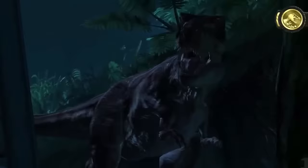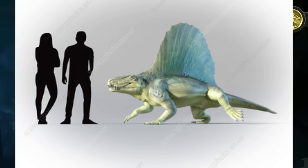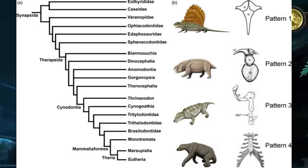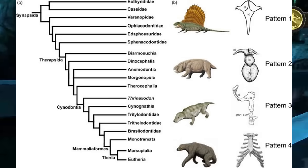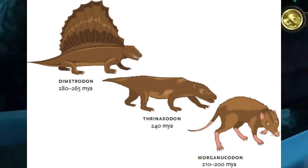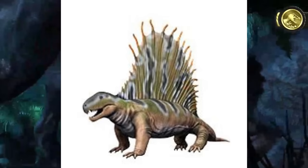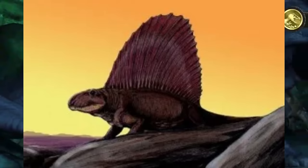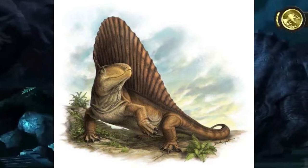Dimetrodon, the famous sail-backed creature from the Permian period, is commonly misunderstood as a direct ancestor of dinosaurs or even humans. In reality, Dimetrodon is classified as a synapsid, belonging to a group known as mammal-like reptiles. Synapsids eventually gave rise to therapsids, within which modern mammals evolved. Although Dimetrodon shares an ancestor with mammals, it doesn't mean it's a direct ancestor of modern humans or dinosaurs. It represents a branch in the evolutionary tree that eventually led to mammals, making it more like a distinct cousin rather than a direct ancestor.